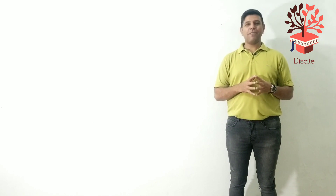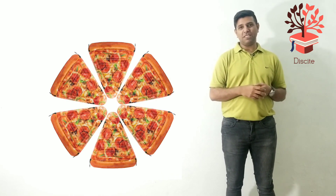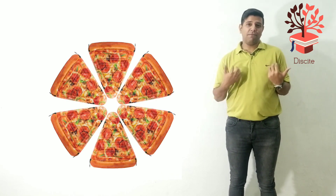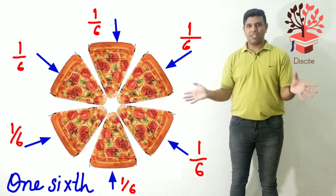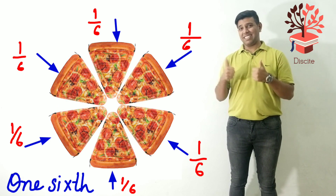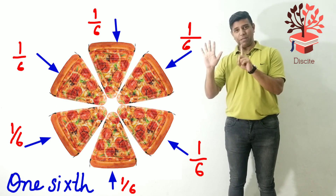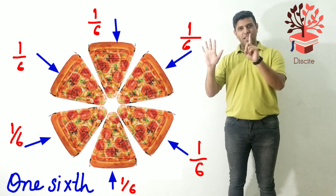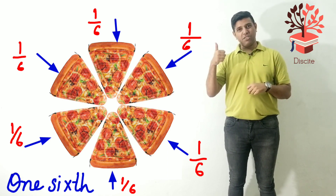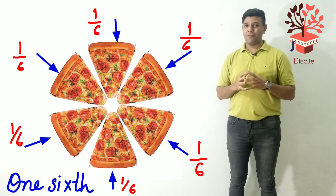Why am I talking about this? Because that's important. Let's say you like getting your pizza cut into six pieces. Now let's say there are six of you sitting. So each of you would get one sixth — six pieces in total, six people, everyone gets one. So you get one piece, you get one sixth. I get one piece and I get one sixth as well.